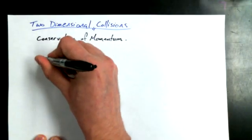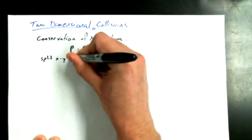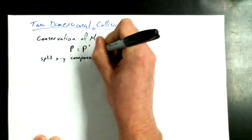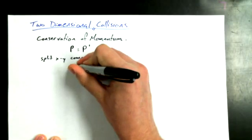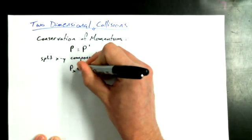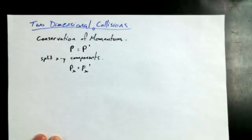But if I want to split it into X and Y components, it might be nicer to write it like this. In the X direction, momentum is conserved. And then I suppose you might say that in the Y direction momentum is conserved. But let's write it out for the X momentum.